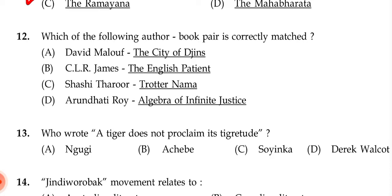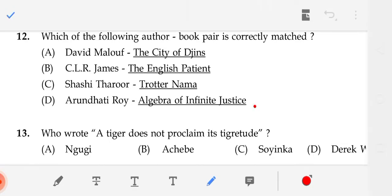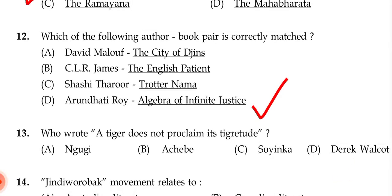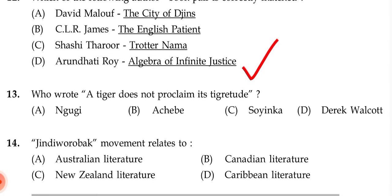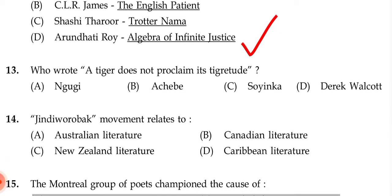Which of the following author-book pairs is correctly matched? The correct answer is D — Algebra of Infinite Justice written by Arundhati Roy.